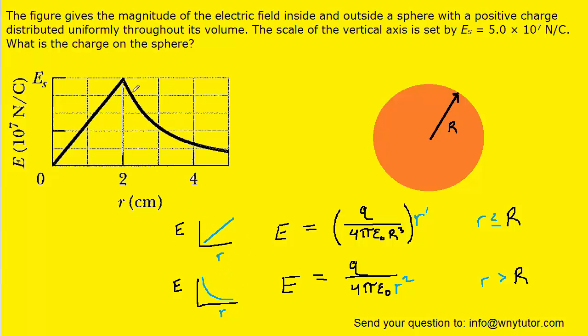It's interesting because the graph that they give us takes on both of these shapes. We have the linear portion, which is right here, and then we have this parabolic portion, which is right here.